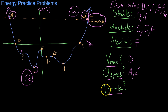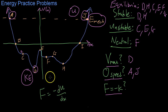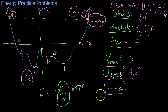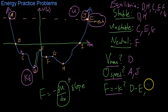Lastly, where is the force negative? Force is the opposite of the derivative of the potential energy function, so wherever there is a positive slope, the force is negative. From d through e we can see there's a positive slope, so the force is negative there. Then there's once again a positive slope from h all the way to our last reference point j. That concludes our coverage of work and energy.